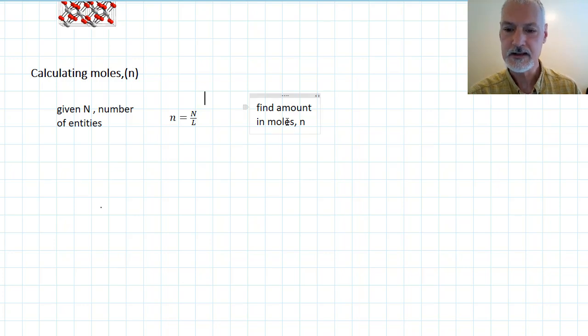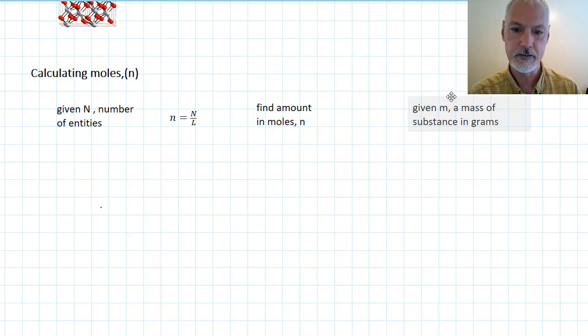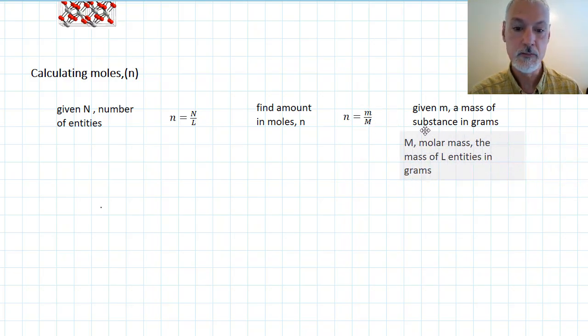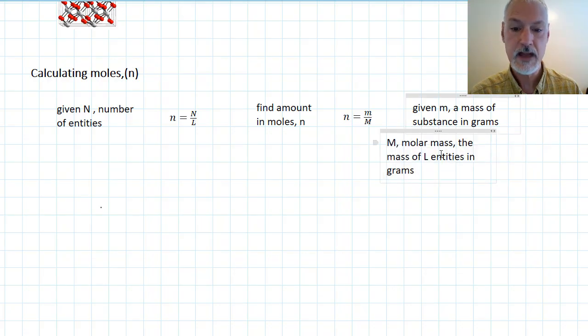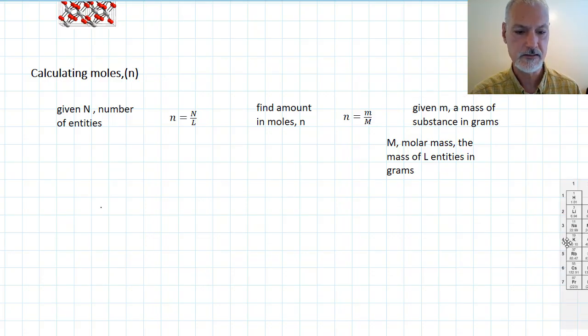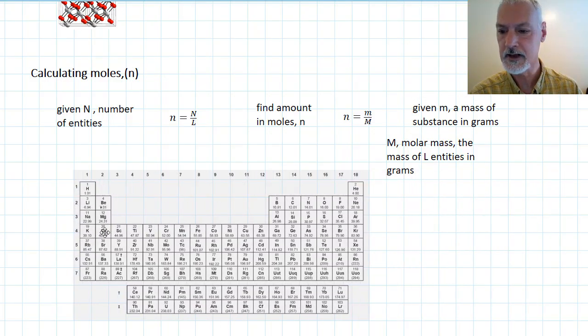There's another technique to find moles if we're given the mass of a substance in grams. To do that, we could calculate the number of moles by dividing that mass by something we call the molar mass. The molar mass being that mass of substance that contains Avogadro's number of particles. Let's look at how you could figure out what that number happens to be.